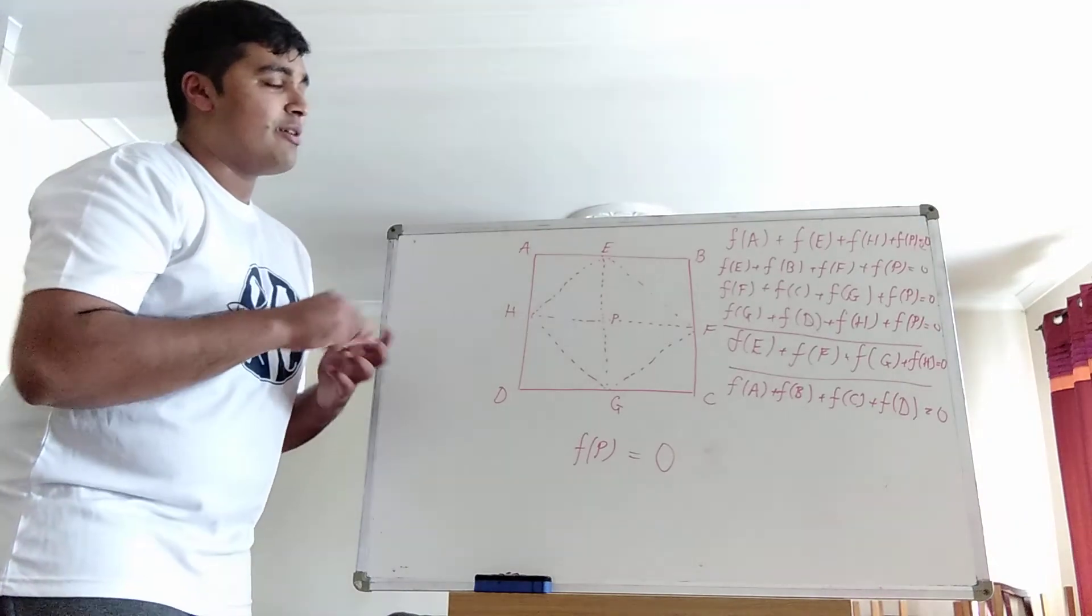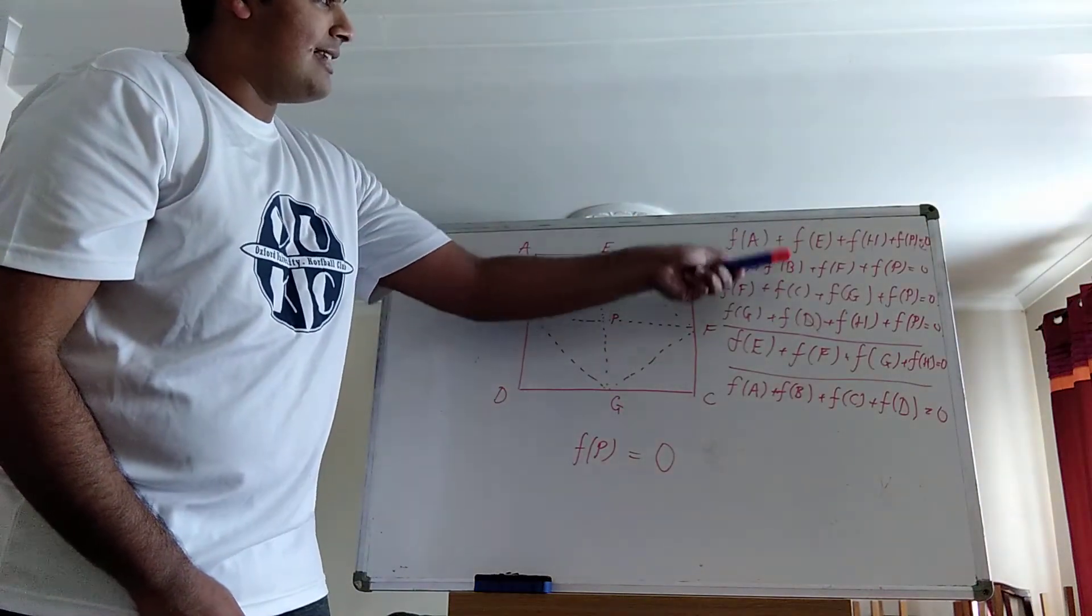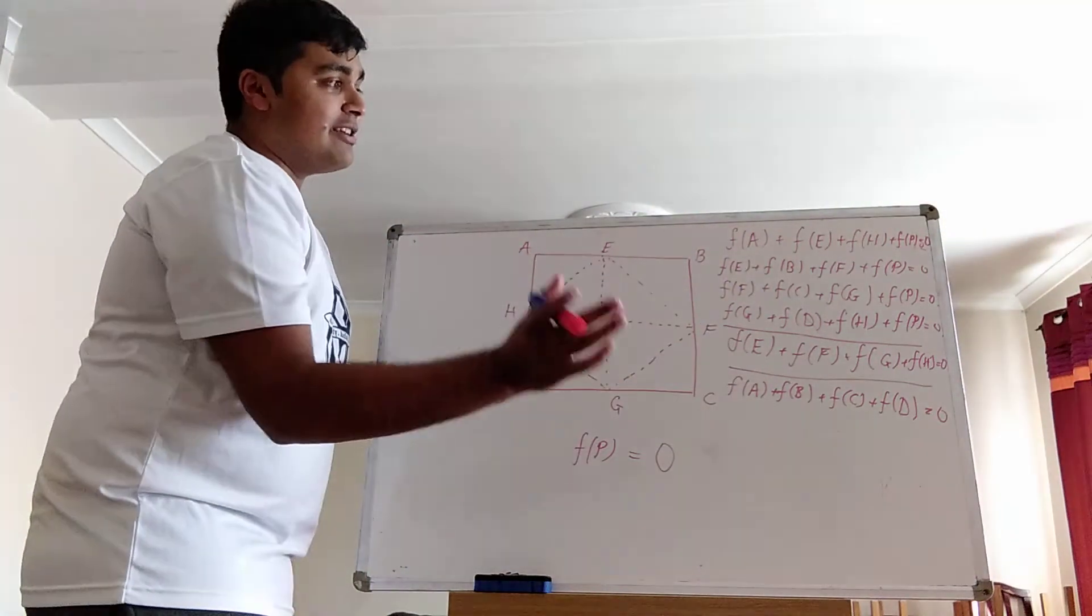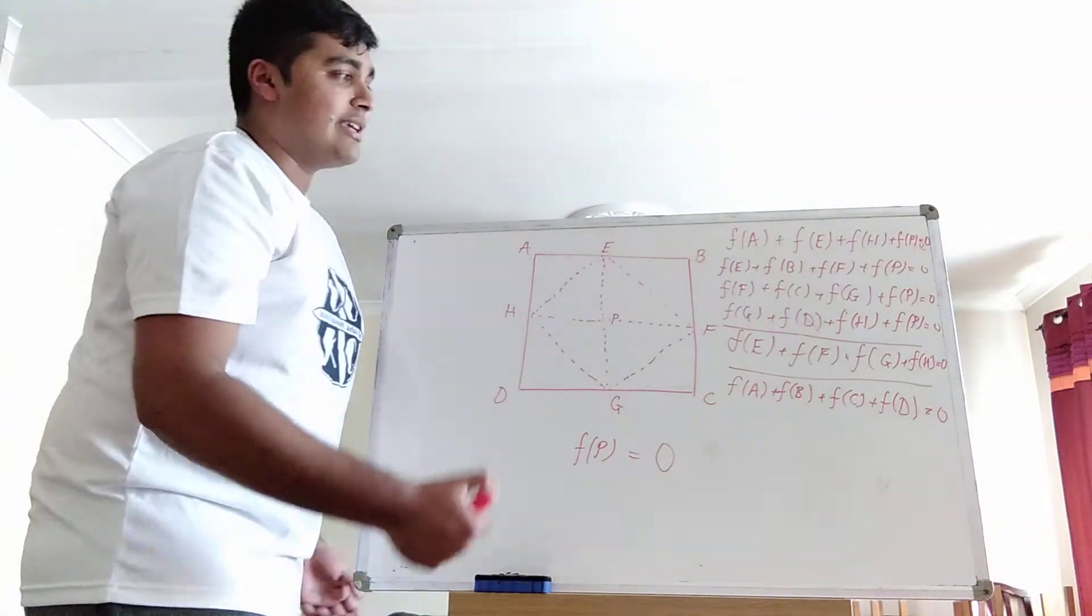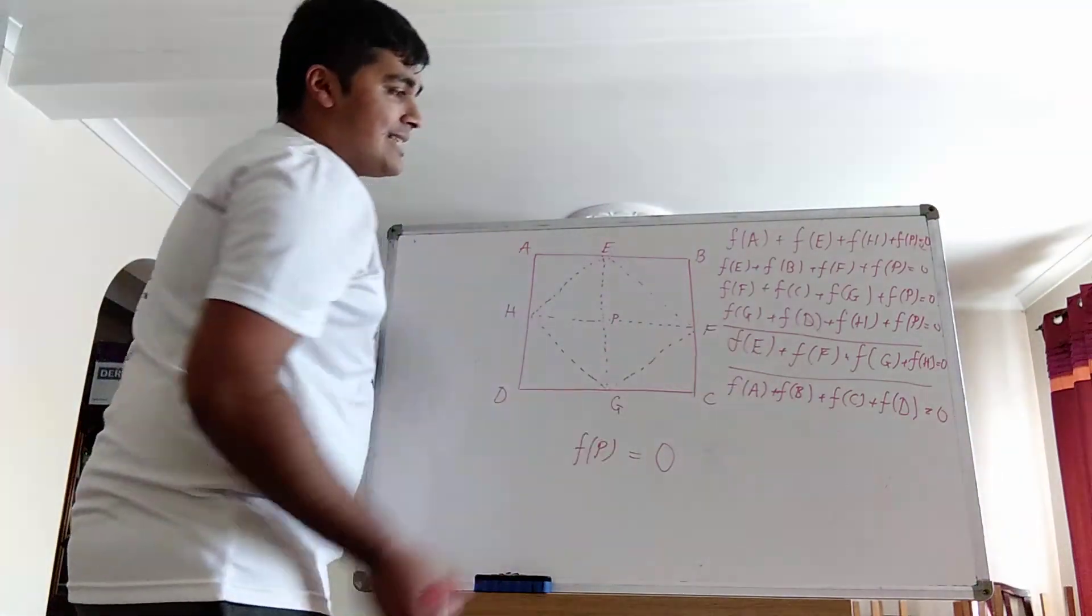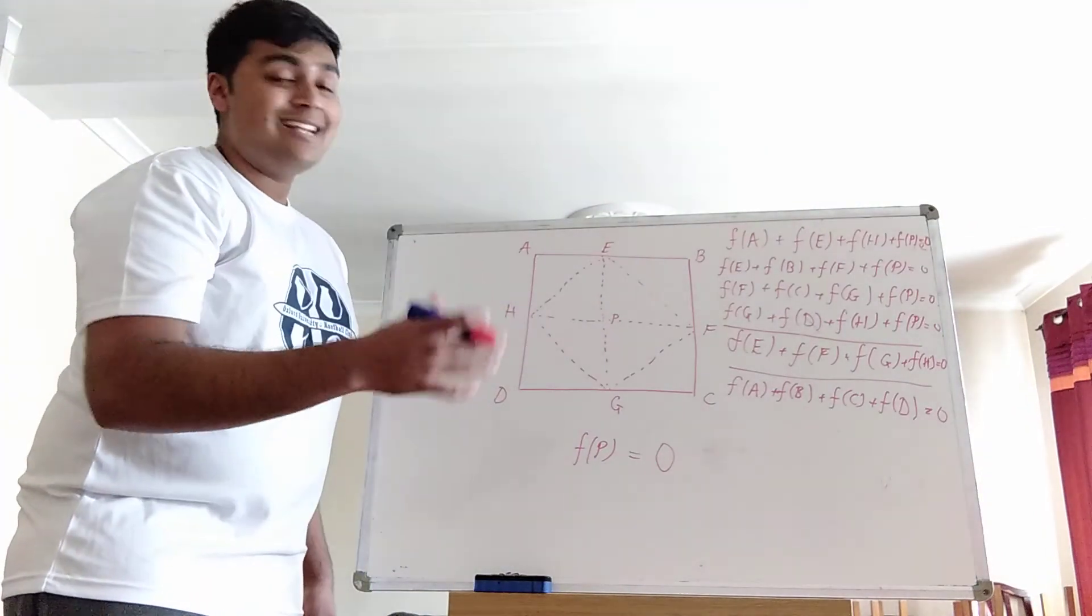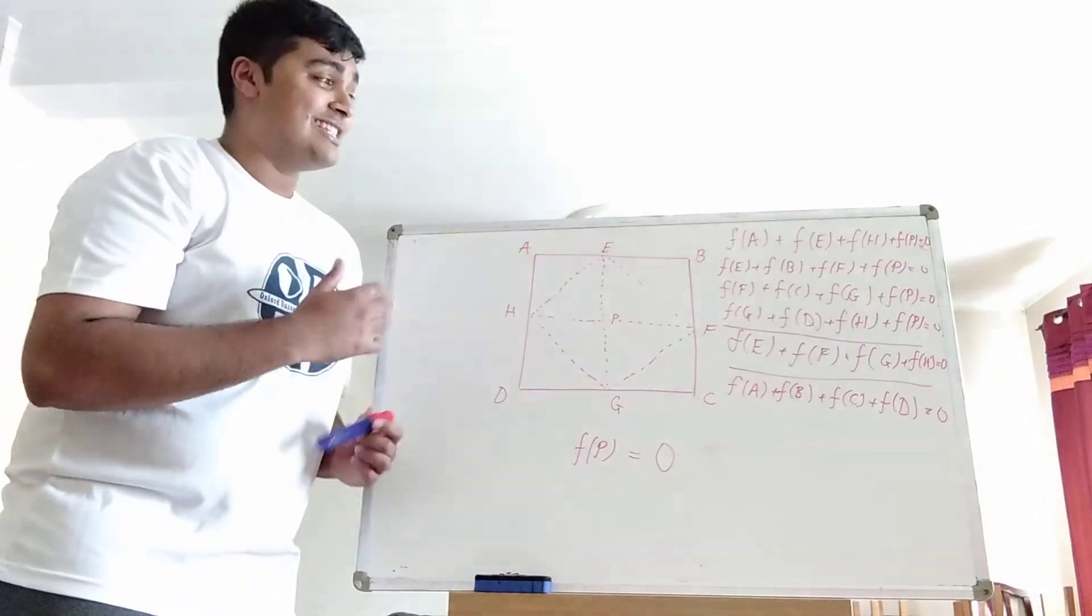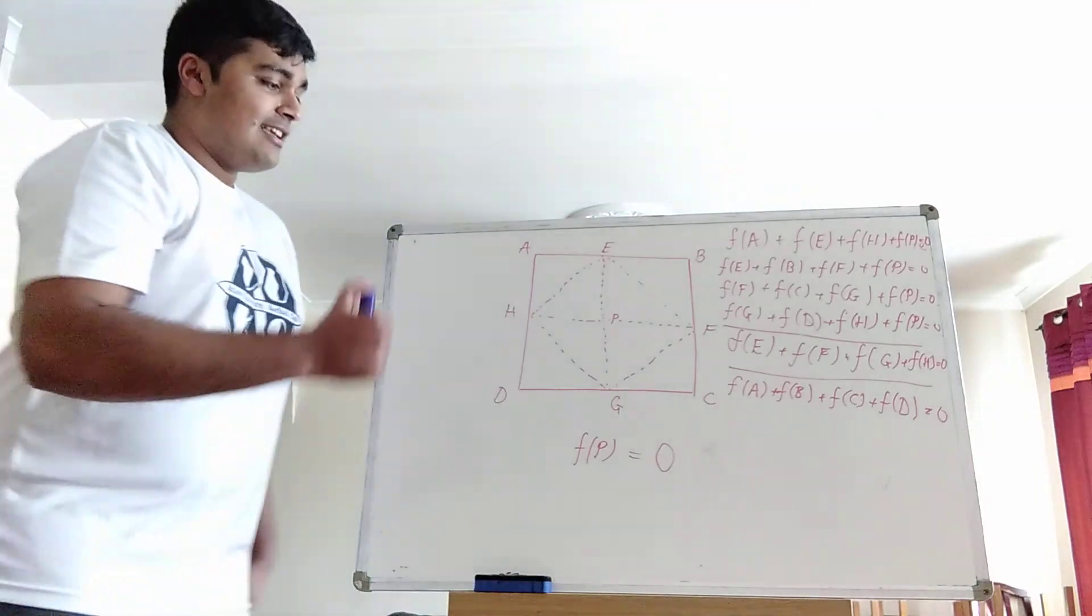Okay, so let me just quickly go over what I just did there. I had these four equations here. I added the left-hand sides all up for each four of these sides. And then I used these two equations here to get rid of a bunch of stuff. I got rid of one lot of that because it equals zero. And I got rid of two lots of this, again, because it equals zero. And all I was left with was four f(p). And on the right-hand side, I just get zero plus zero plus zero plus zero, which is zero. So I can deduce that f(p) equals zero.